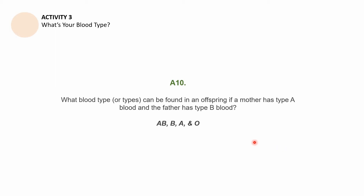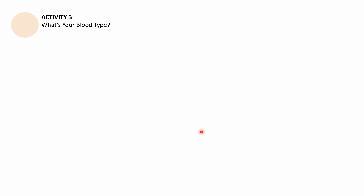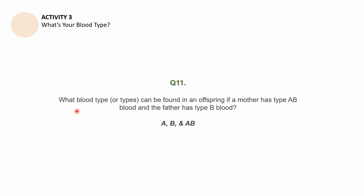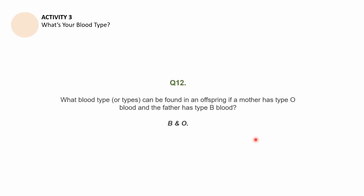For Question 10, the possible blood types in an offspring whose mother has type A blood and father has type B blood are: AB, B, A, and O. For Question 11, where the mother has type AB blood and the father has type B blood, the possible blood types are A, B, and AB. For Question 12, where the mother has type O blood and the father has type B blood, the answers are B and O. I hope you got a very good score in this activity.